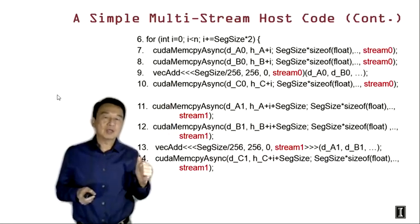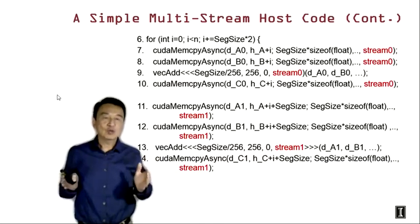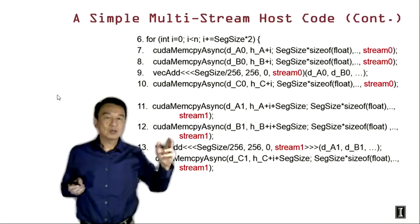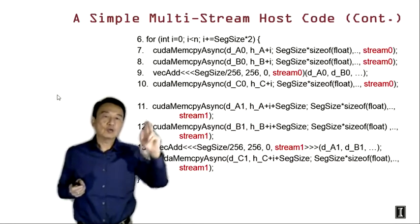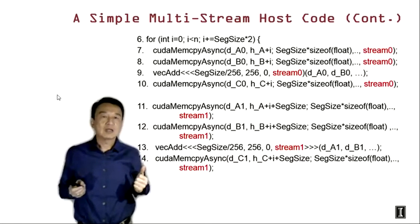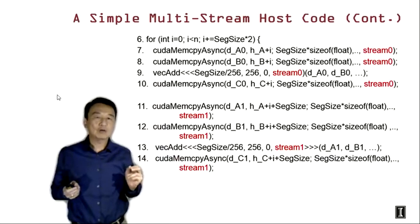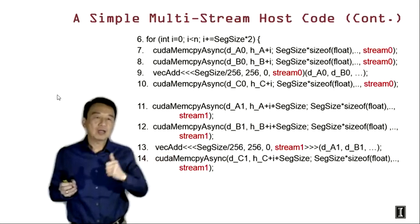We would divide all the input and output vectors into equal-size segments, with the size of each segment defined by the variable seg_size. We're going to cover the data transfer and computation of two segments in each iteration of this loop. So if we divide the vector into 100 segments, we will iterate the loop 50 times, and each iteration we take two segments, send them to the GPU for computation, and send back the result data.